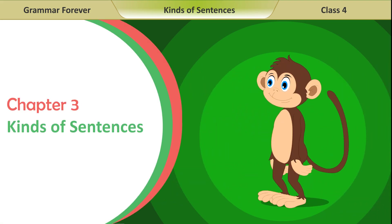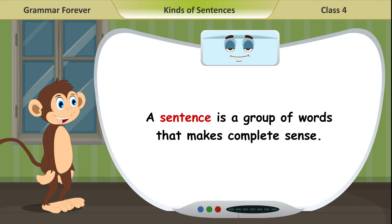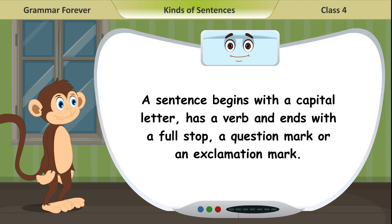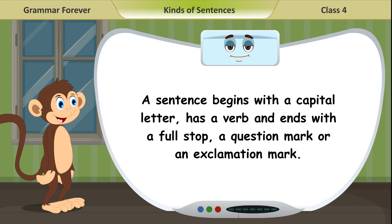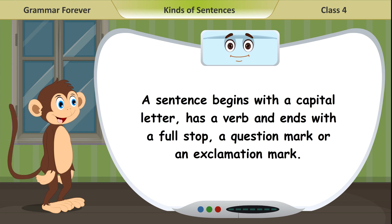Chapter 3: Kinds of Sentences. A sentence is a group of words that makes complete sense. A sentence begins with a capital letter, has a verb, and ends with a full stop, a question mark, or an exclamation mark.